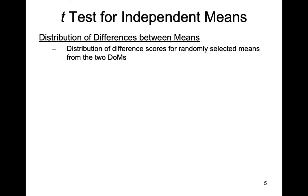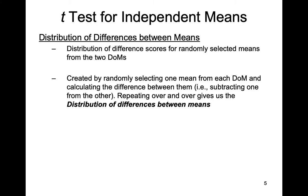The distribution of differences between means is a distribution of difference scores for randomly selected means from the two distributions of means formed by randomly sampling from their parent populations. It's created by randomly selecting one mean from each distribution of means, calculating the difference between them, and repeating this process over and over again. The result is a distribution of differences between means.